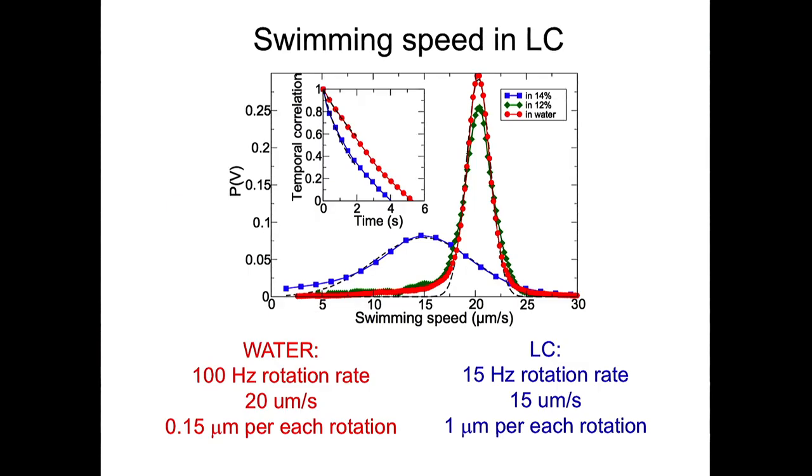What was also quite puzzling is that in spite of the fact that liquid crystal is very viscous medium, the viscosity is by a hundred or a thousand times larger than viscosity of water, bacteria swim still pretty fast. The blue line represents the velocity distribution and the average swimming speed is about 15 microns per second which is only 25% less than the swimming speed of bacteria in water, 20 microns per second.